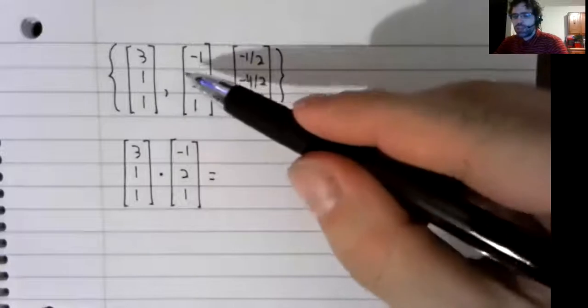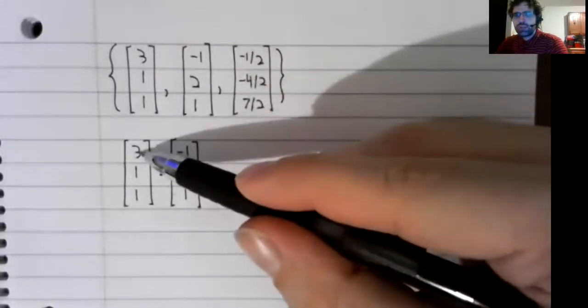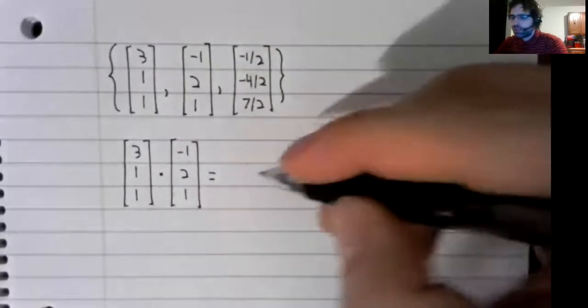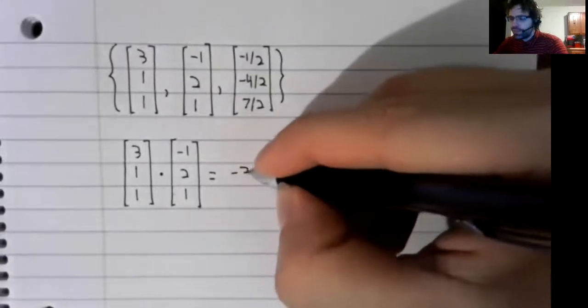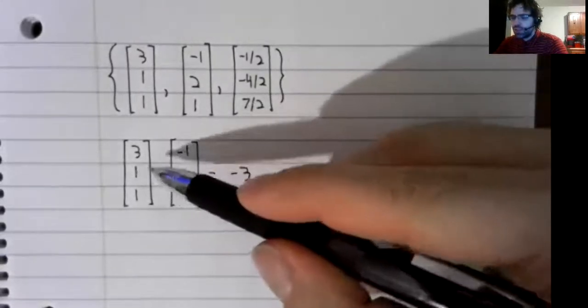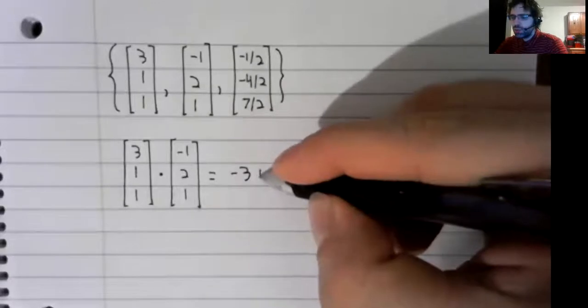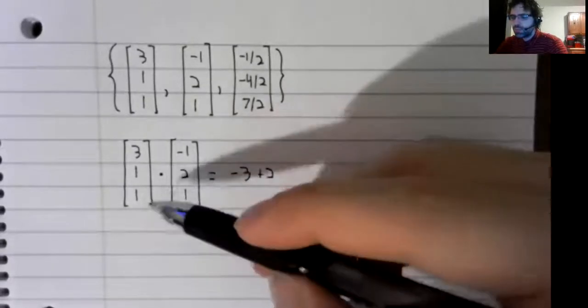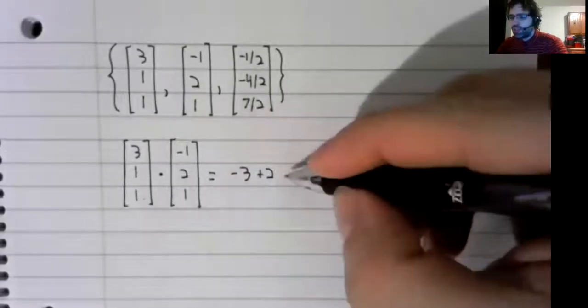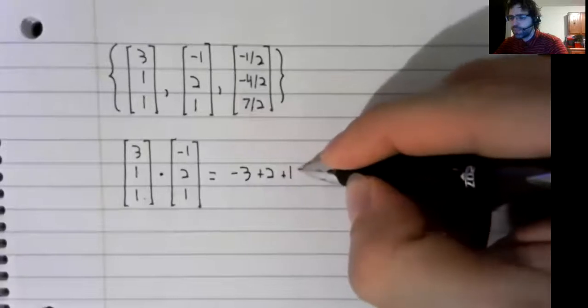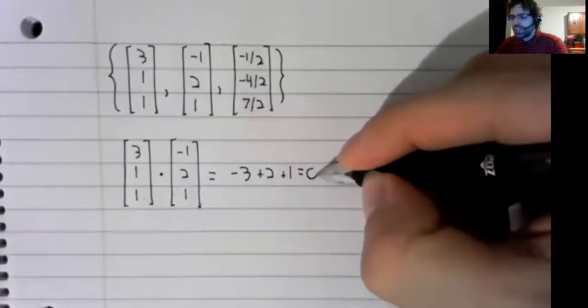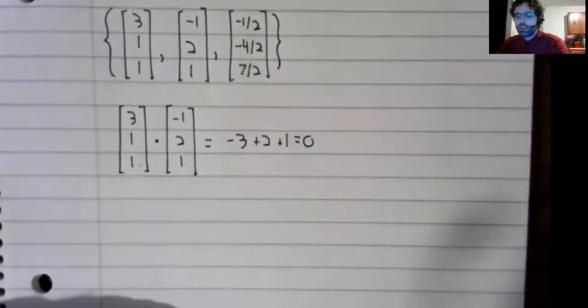But the dot product of these two vectors is negative three, plus two, plus one, which does indeed equal zero.